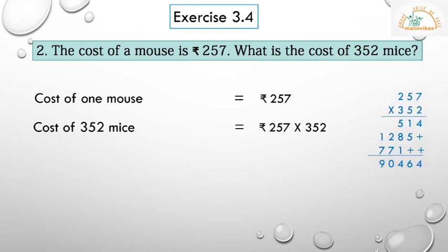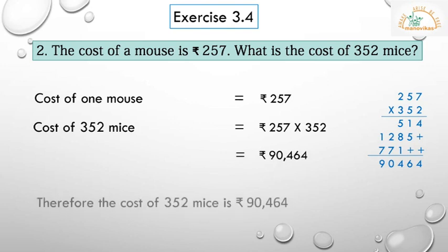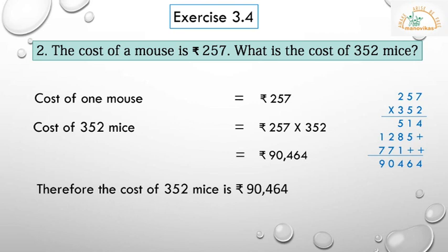We multiply 257 by 352 and we get 90,464. Therefore the cost of 352 mice is rupees 90,464.